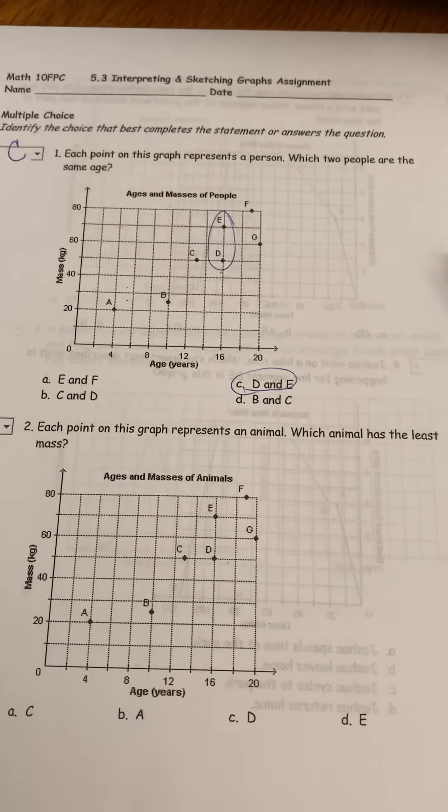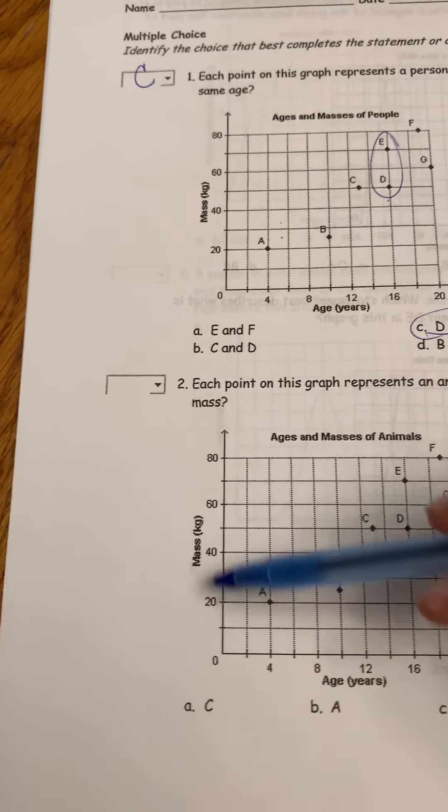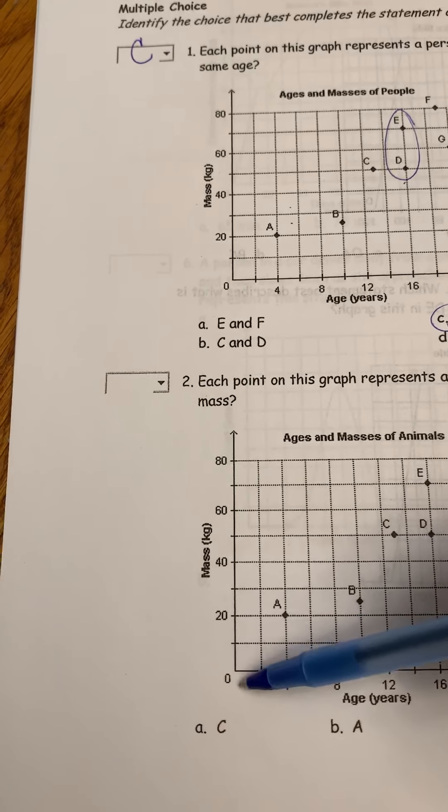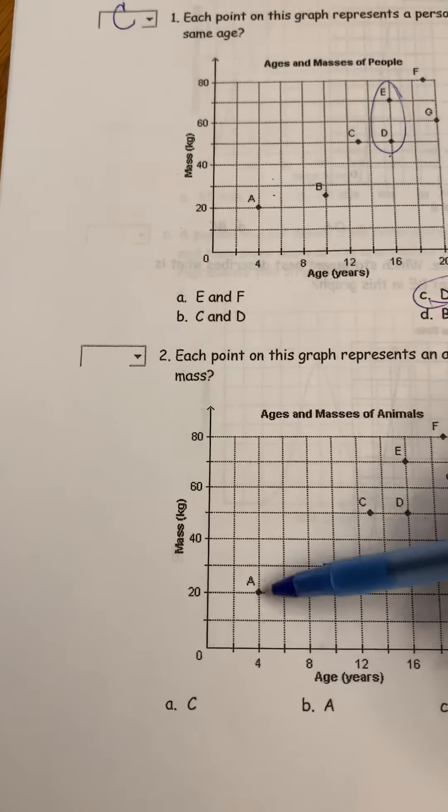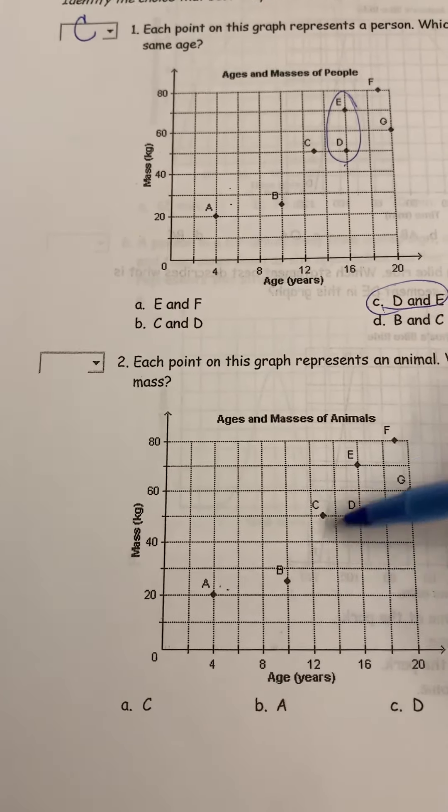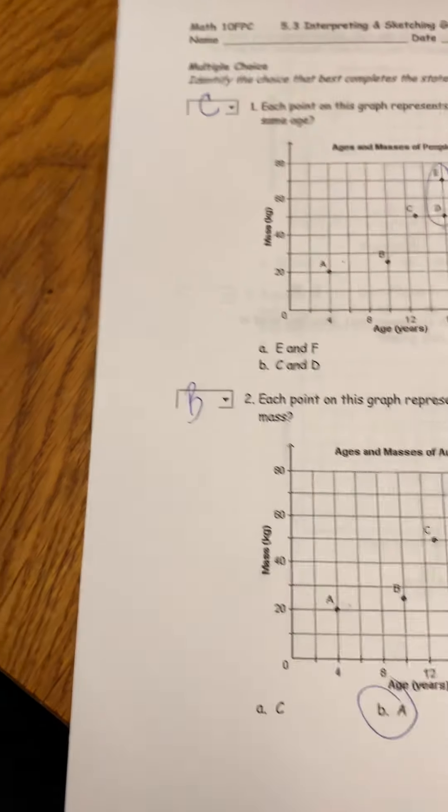Each point on the graph represents an animal. Which animal has the least mass? So we're looking here on the y-axis for the least mass. This is going up by tens and you can clearly see that animal A is the one that only is 20 kilograms and all the rest are larger than that. So your answer there should have been B.